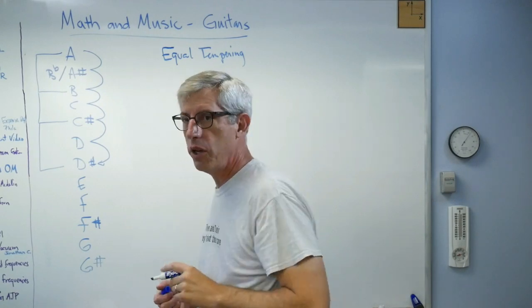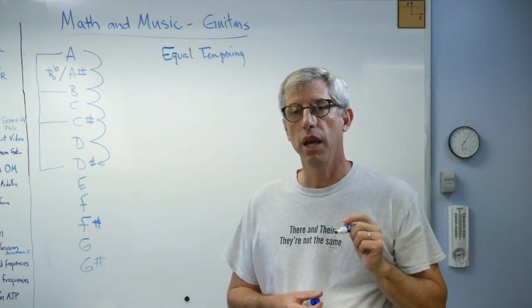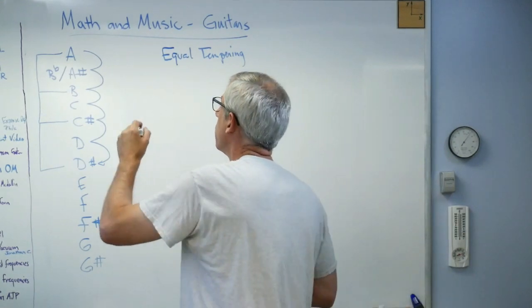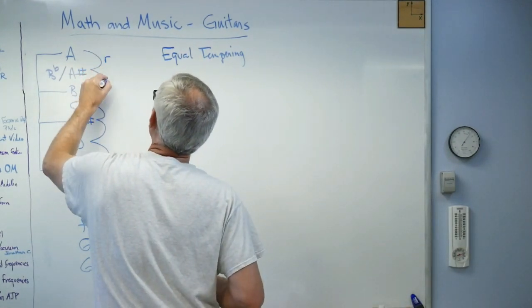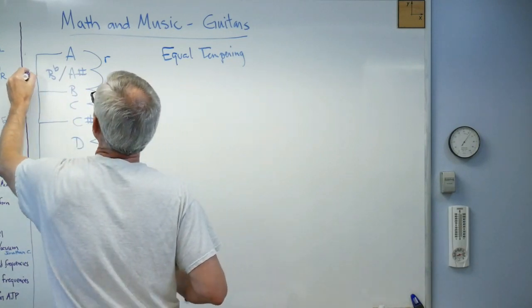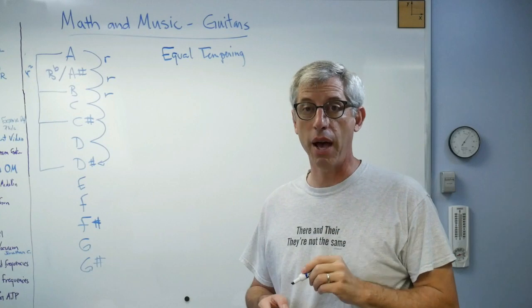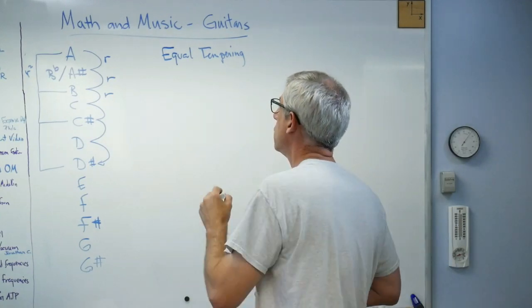Okay? And what we're going to do is, we're going to say that every interval has exactly the same ratio. So, this ratio is some number R. R, R, this is going to be R squared. They have to, the math has to work out. All right?